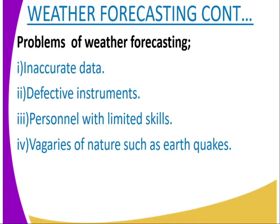Number three is personnel with limited skills. If the person doing the weather forecasting does not have the right skills to make that study, to make that conclusion, to make that forecast, then whatever information you are going to receive will be inaccurate. Number four is the vagaries of nature, like earthquakes and storms. All these result in affecting what was said was going to happen. So those are the problems that face weather forecasting.